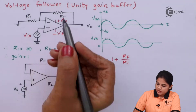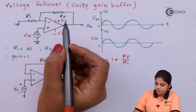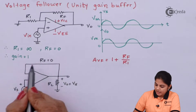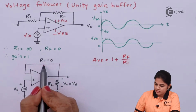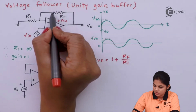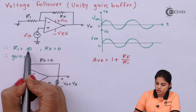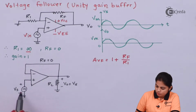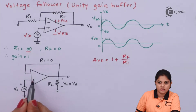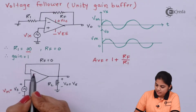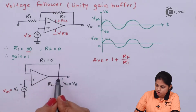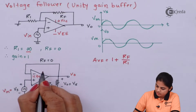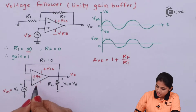If we take RF equal to 0 — that means short-circuiting RF — and open-circuit R1 (R1 equal to infinite), the diagram will change. Short-circuiting RF gives a straight line connection, and since R1 is equal to infinite it is open, so there is no resistance there. Now you can directly see that input voltage Vs (or Vin) is connected to the non-inverting terminal, and the inverting terminal is directly connected to the output terminal V0. This is an IC741 or any other amplifier, with plus VCC and minus VEE.